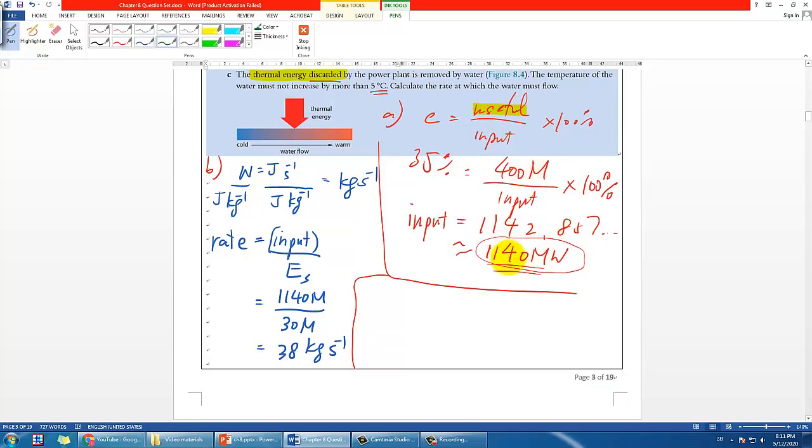So let's try it. Apparently the wasted energy would be the total minus the useful. So that would be 1140, which is the thermal energy per second, so say per t, divided by t, minus 400. That would be 740 megawatts.